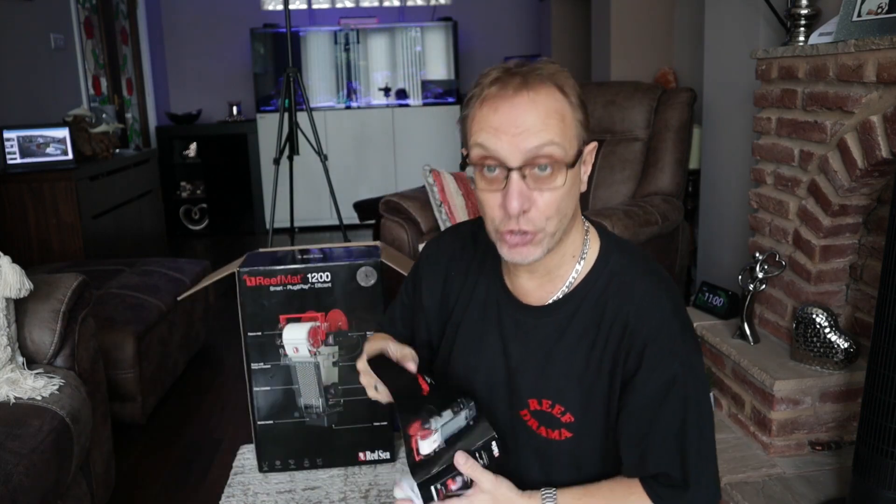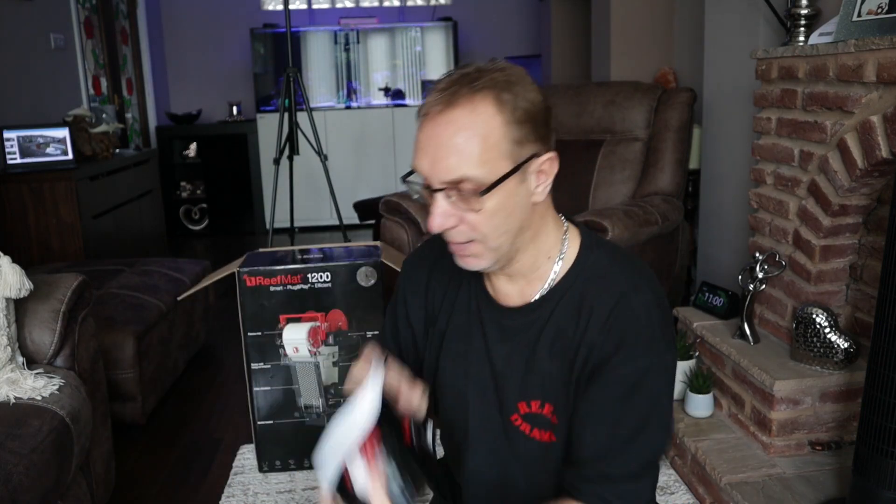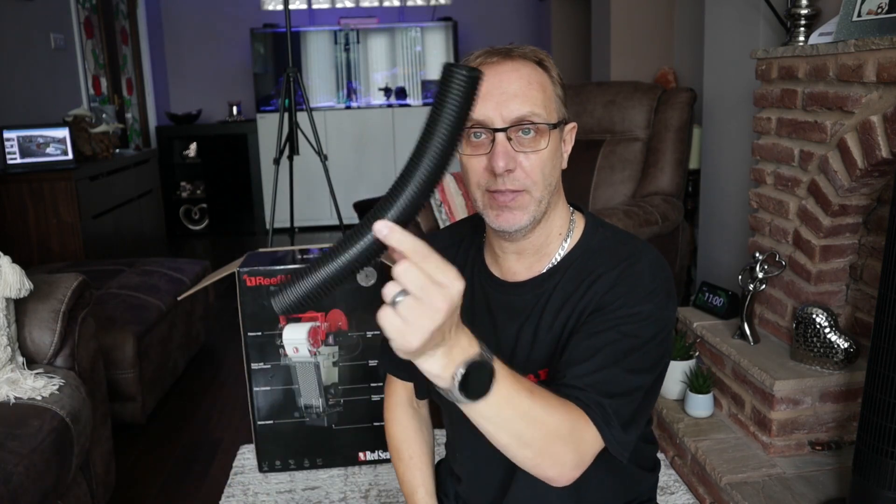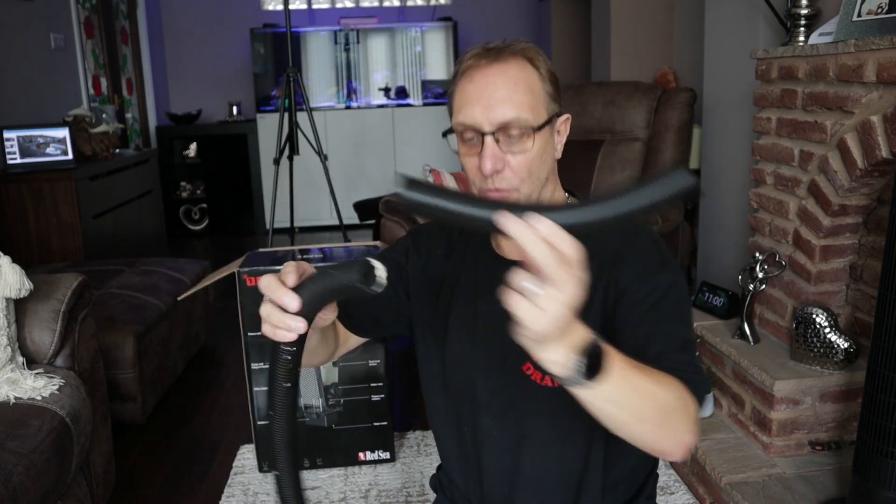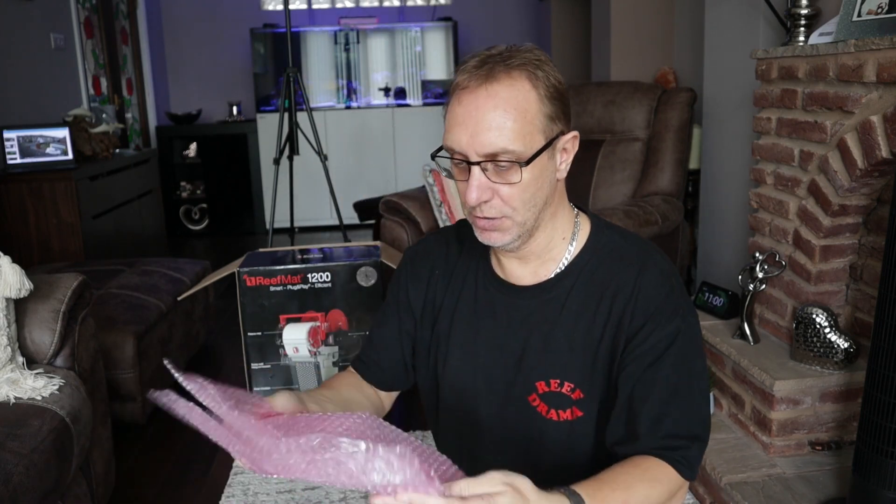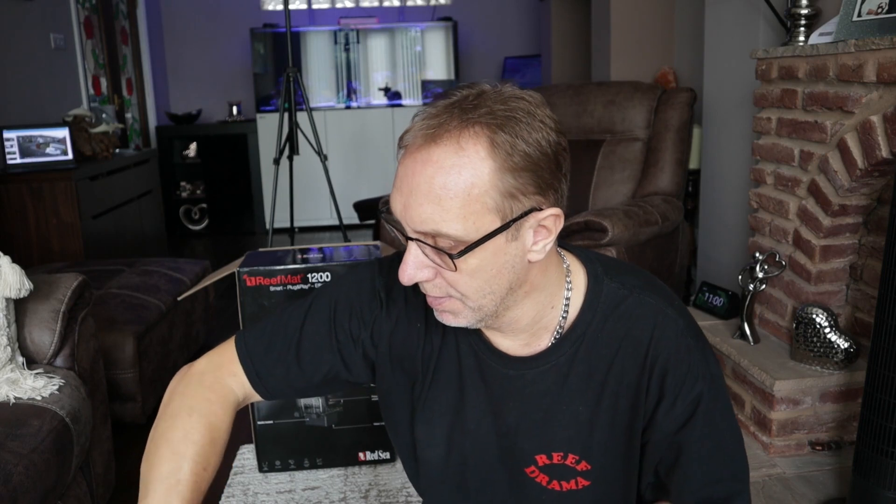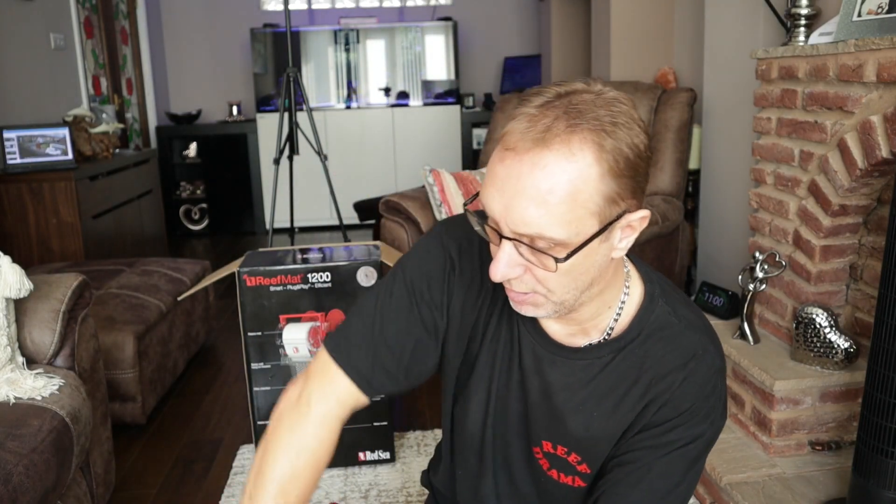We've got an instruction manual. Probably going to need that. There's an extra little bit that was cut off. There's only that little bit there that has been cut off. We've got some packaging. And we've got the cage that goes at the very bottom. You can put media into this, like carbon or Rowaphos.